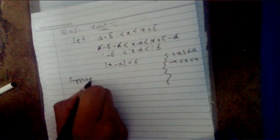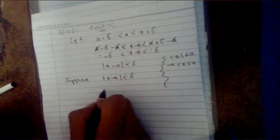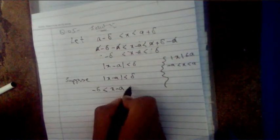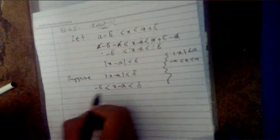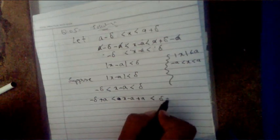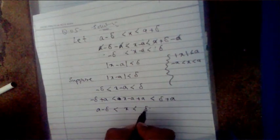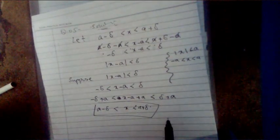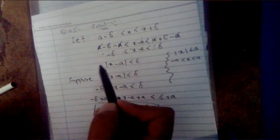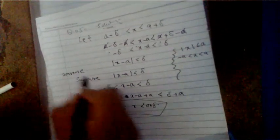Now suppose that |x minus a| is less than delta. By the definition of absolute value, this gives x minus a greater than minus delta and less than plus delta. To remove minus a, we add a to all sides of this inequality, giving a minus delta is less than x is less than delta plus a, which is a plus delta. We have now proved both directions: the forward implication and its converse. Therefore the if and only if statement is proven.